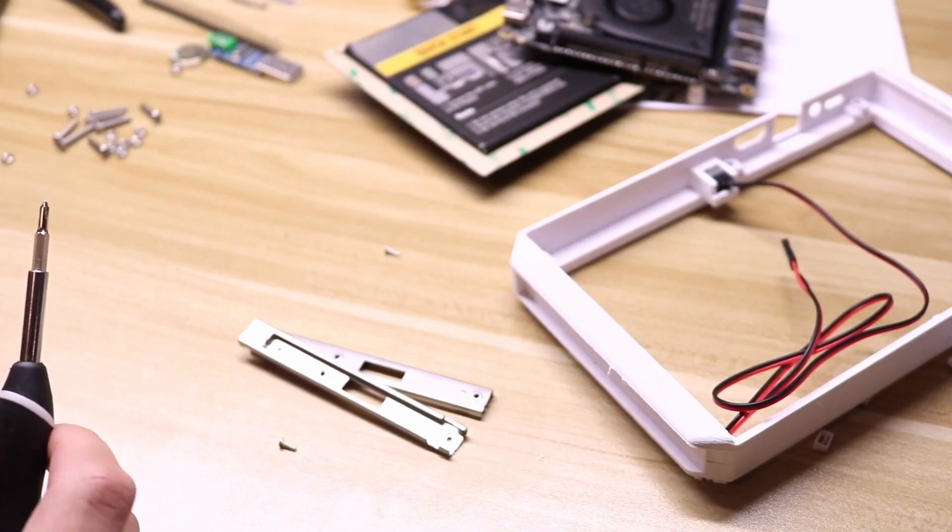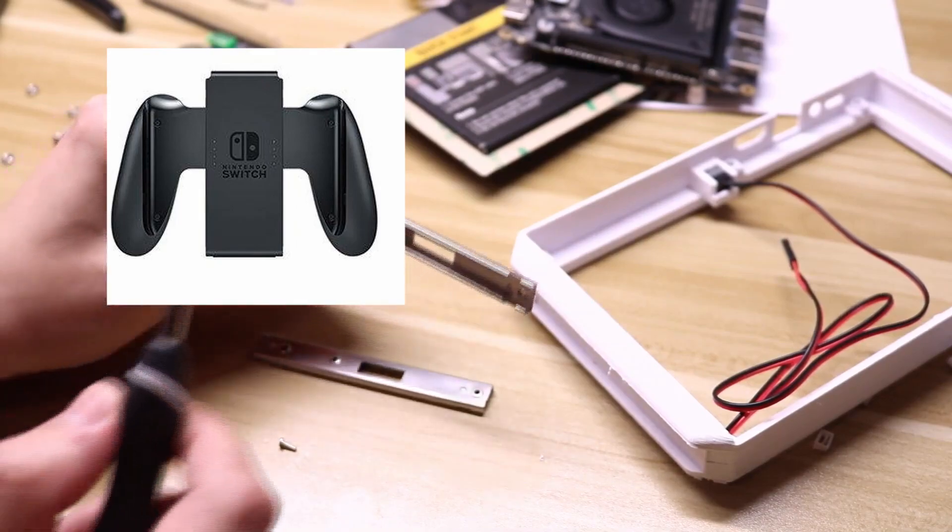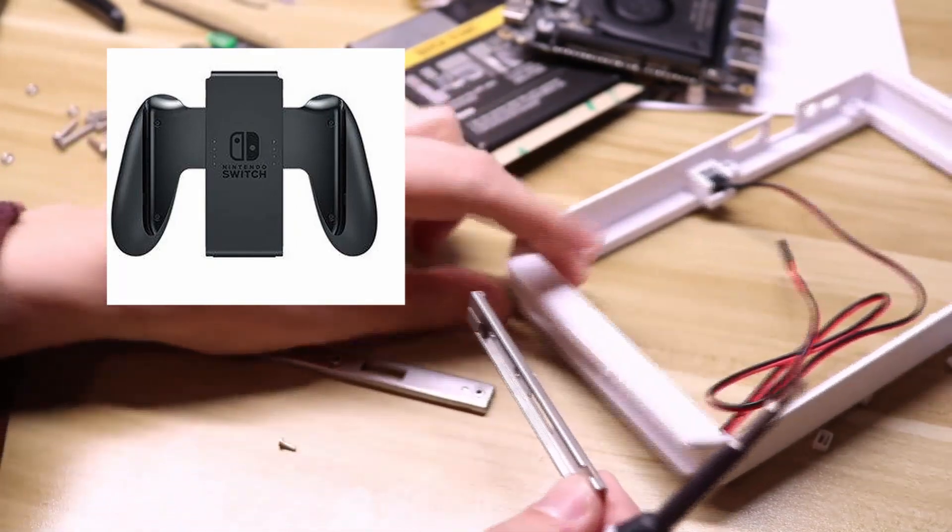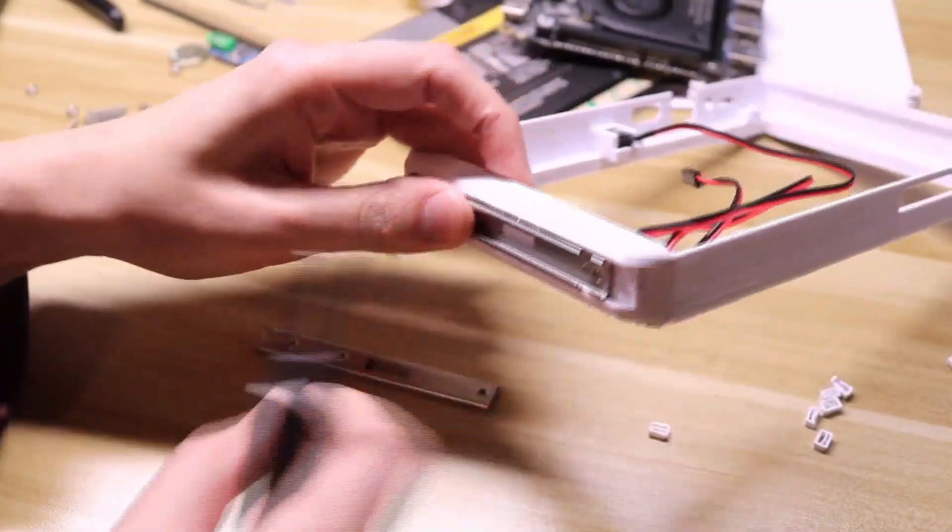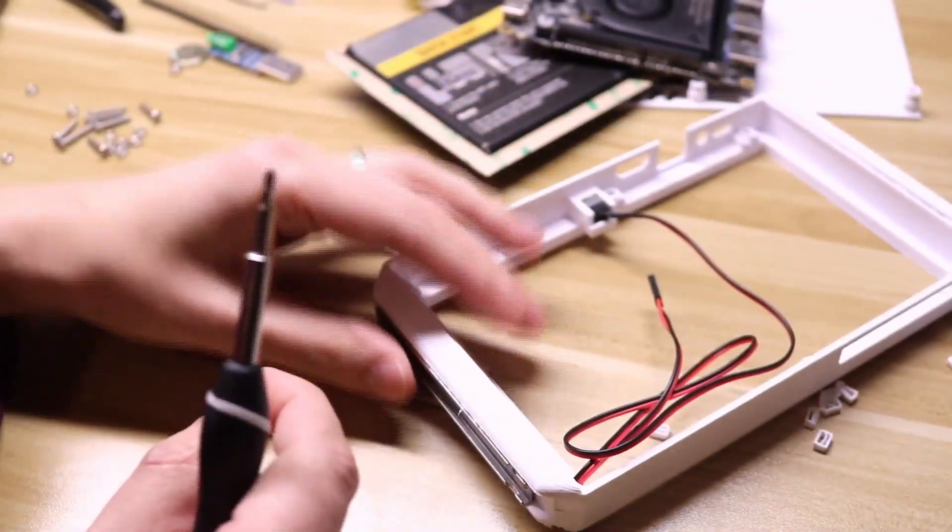For those of you who want to use it as a Nintendo Switch, grab these metal brackets from your Joy-Con accessory that came with your Nintendo Switch, slide them in the rail, and you're just going to muscle in the screws into the plastic.